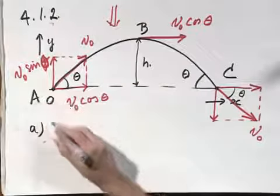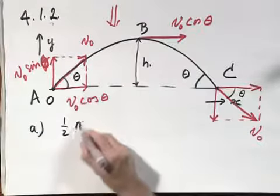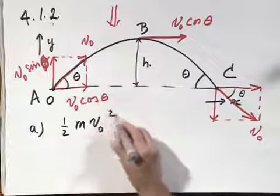And now the first question A is, what is the kinetic energy at point A? Well, that obviously is one half m v zero squared.